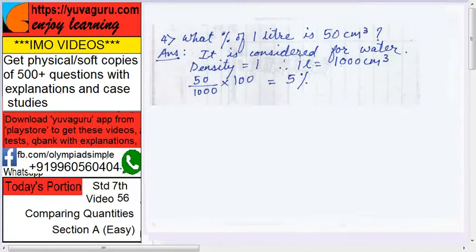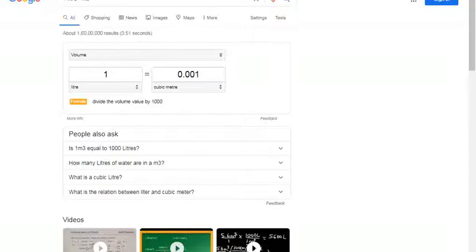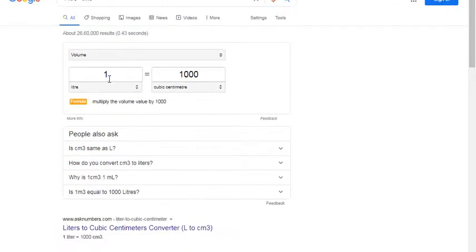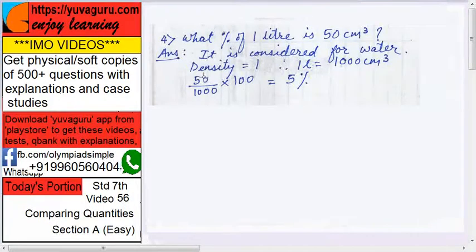Why? Because 1 liter equals to 1 cubic meter... sorry. See this conversion: 1 liter equals to 0.001 cubic meter, right? And 1 liter equals to 1000 cubic centimeter. These are the two conversions. So 50 upon 1000 into 100.